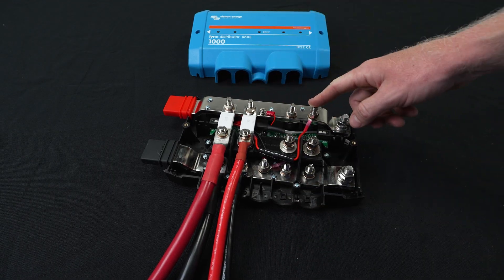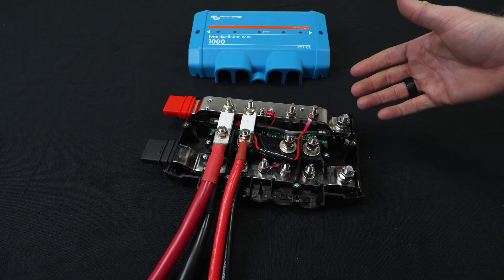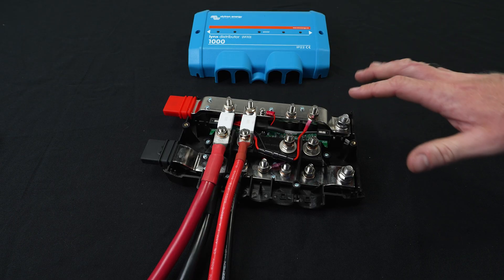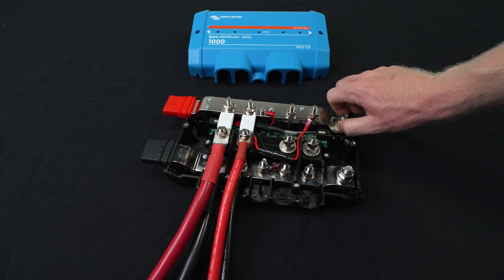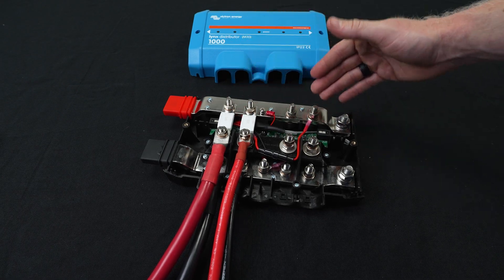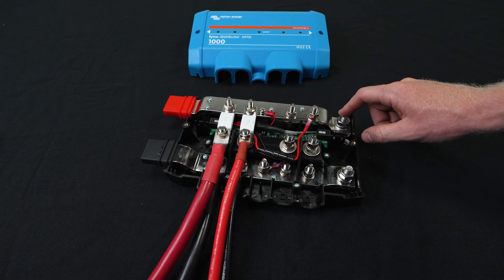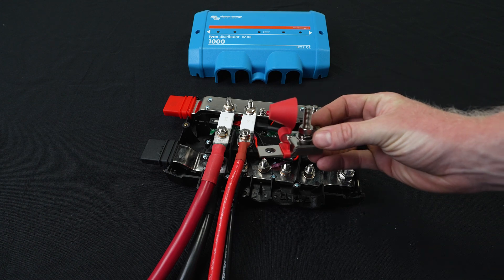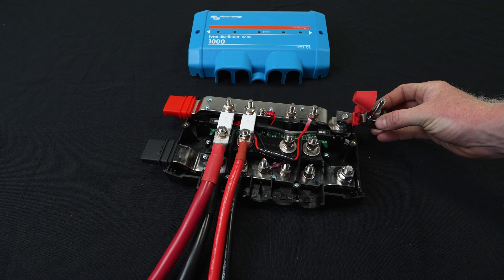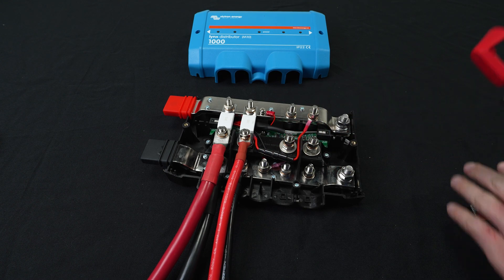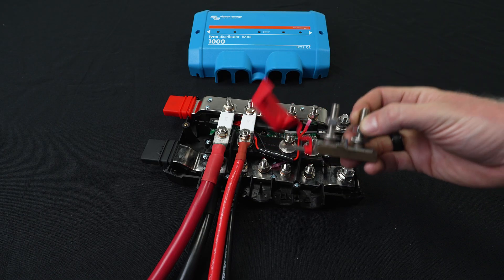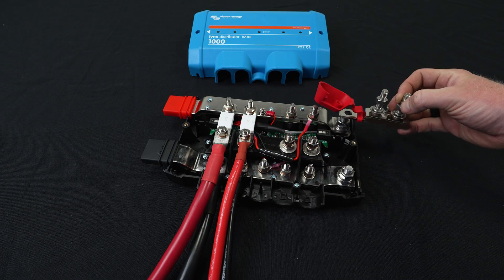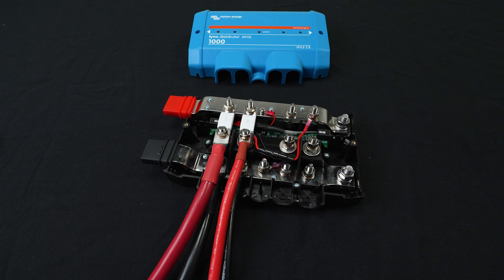Whereas on the positive, you want to make sure each connection is individually fused with a few exceptions. So to do that, to add an extra slot for a positive, we can actually land an MRBF holder on this post here. There's even the option to add a dual post MRBF holder. And then we would add two fused circuits to the right side of the Lynx distributor. So we're going to show you how to do that.